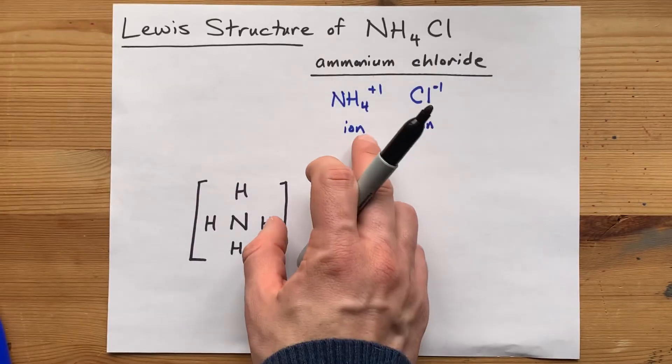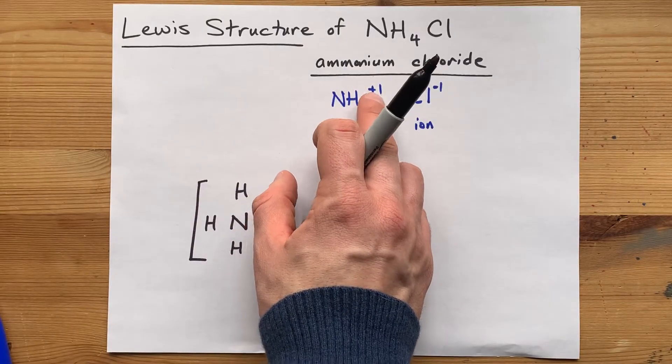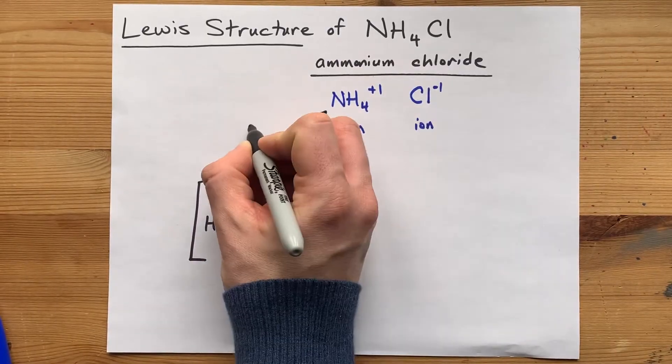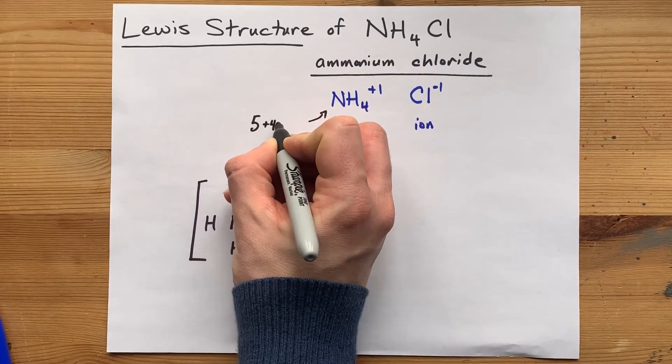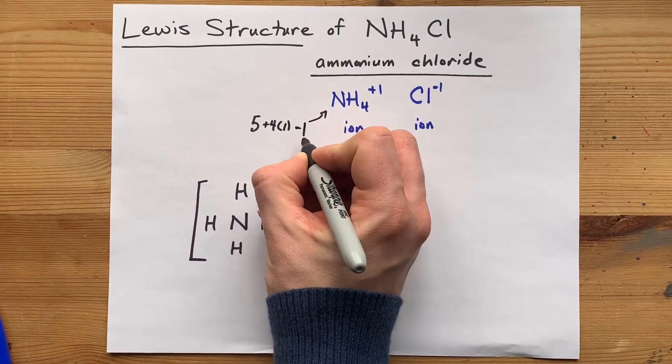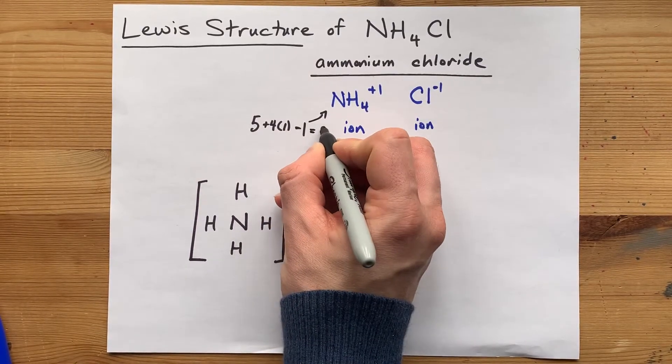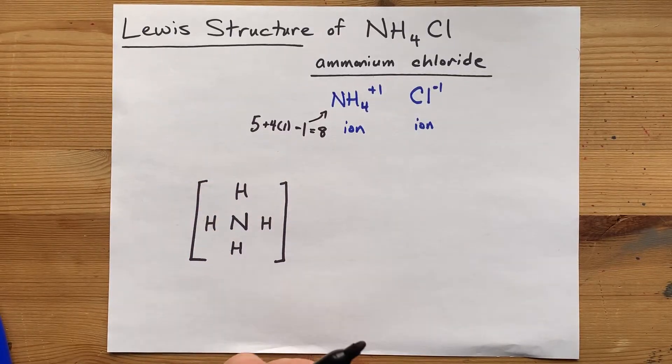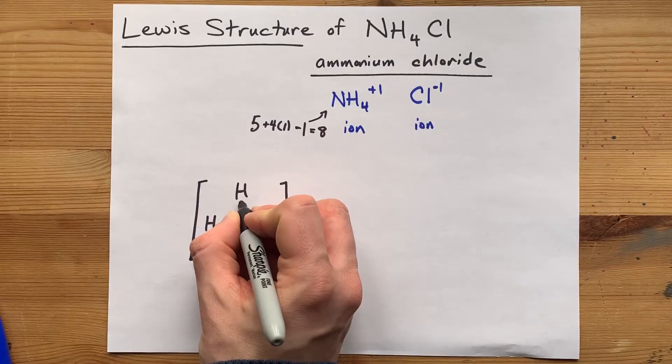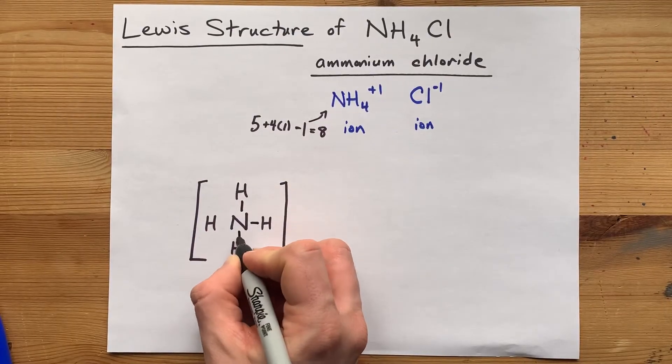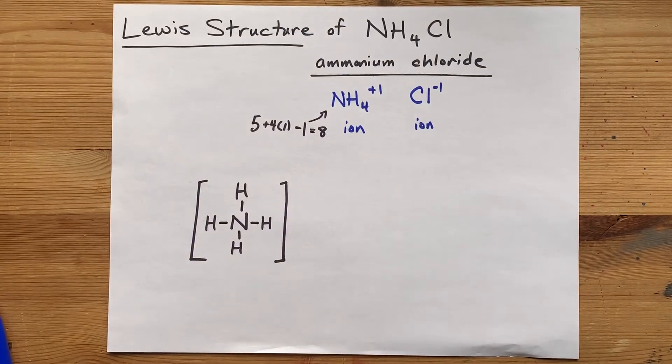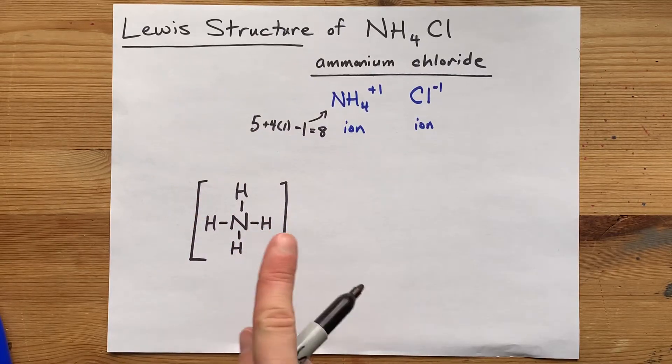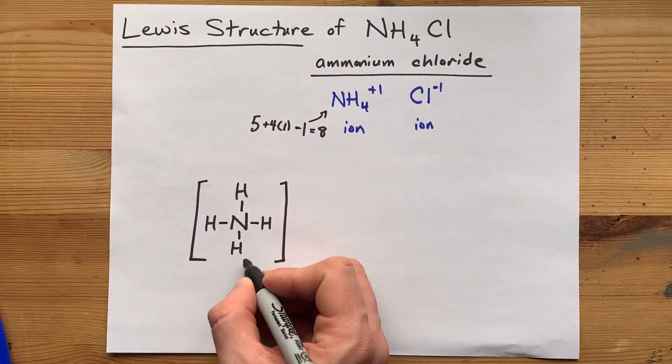But this positive one charge means you have lost one electron as well. Five plus four ones take one away for the positive charge, leaves you with eight valence electrons in this structure total. That's just enough to single bond the N to each of the H's. That's all eight of the valence electrons in that ion.